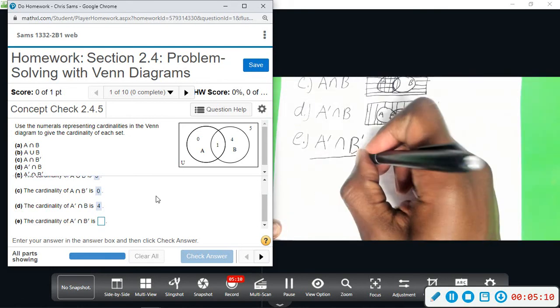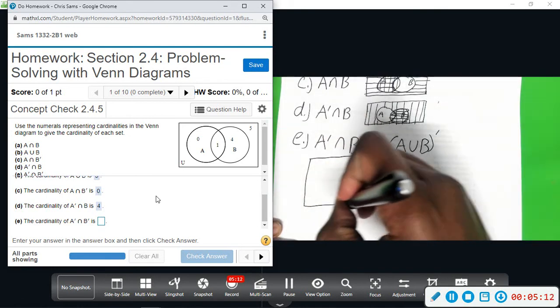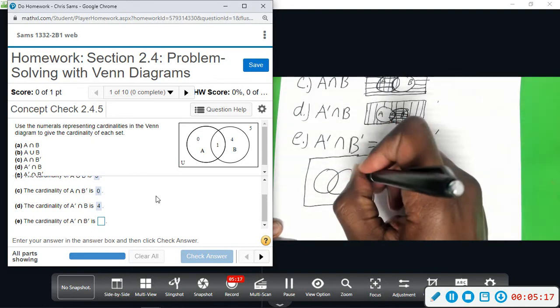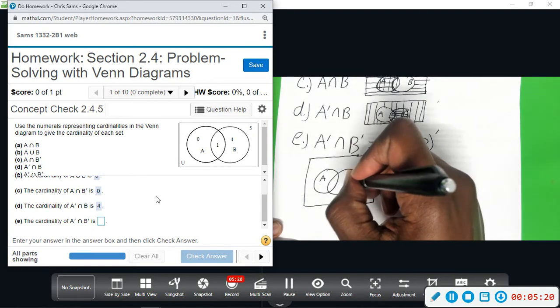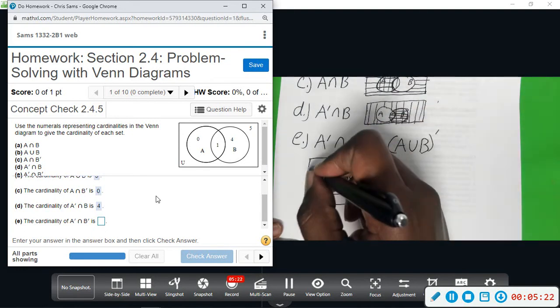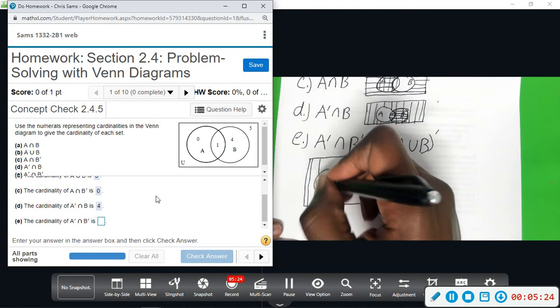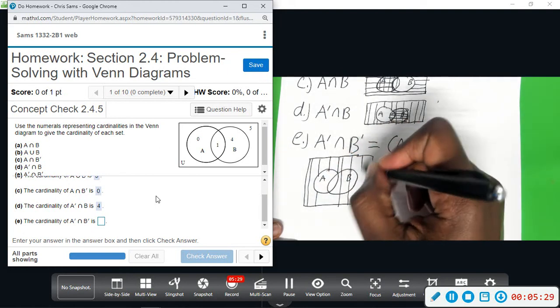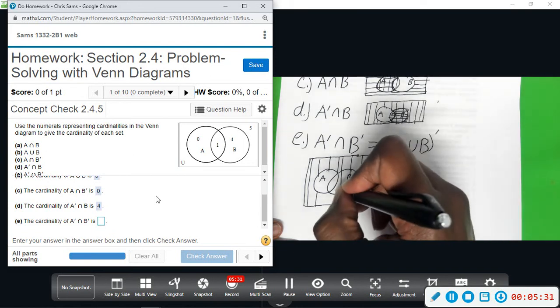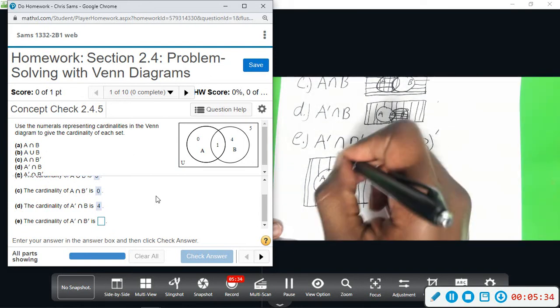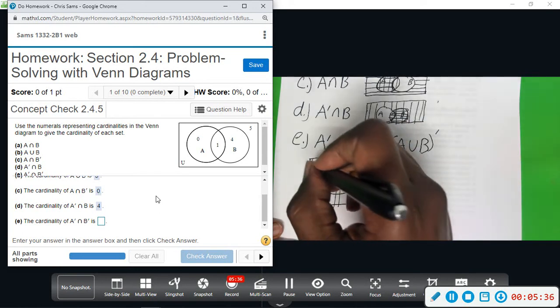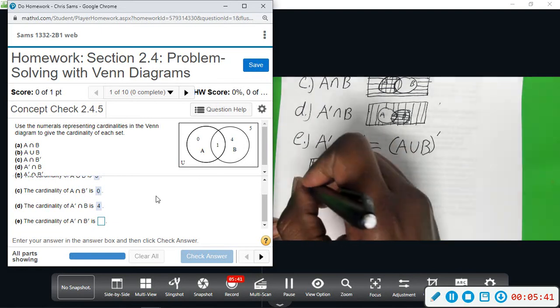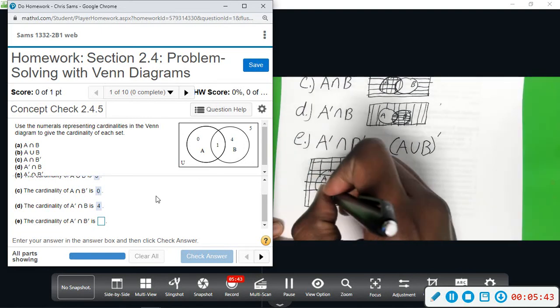So here I'm going to do overlapping shadings and then get the double shaded portion. We have A and B. A complement, I'm going to do vertical—everything but A. So this is A complement with vertical lines. And then B complement, I'm going to do horizontal lines—everything but B. Not going to go into B with the horizontal lines.